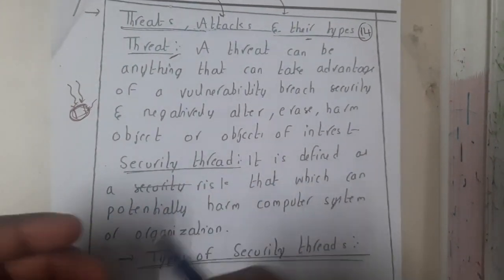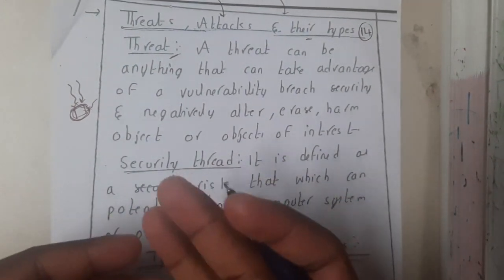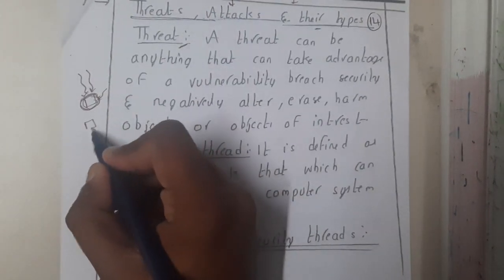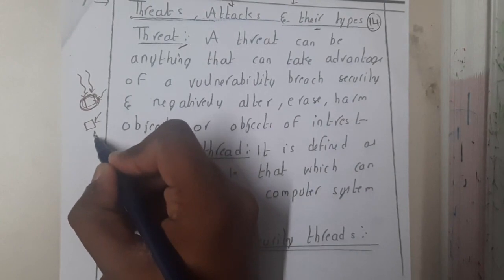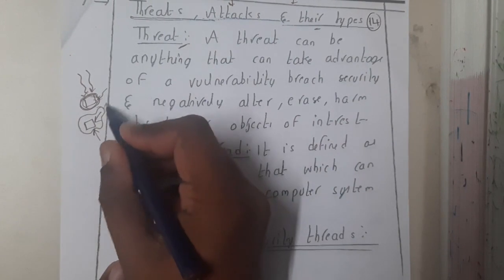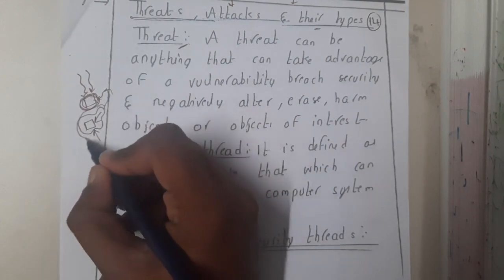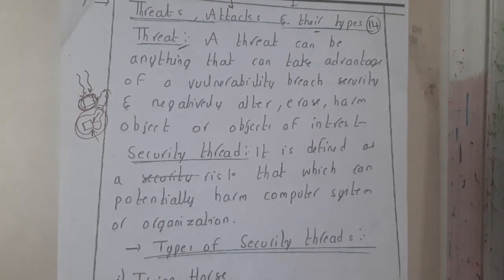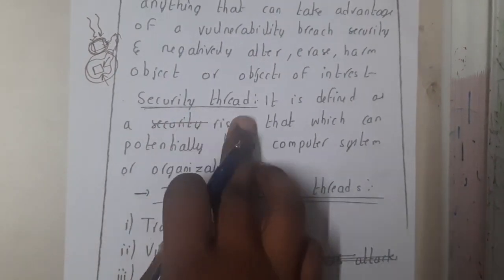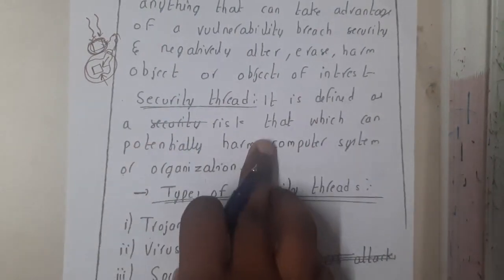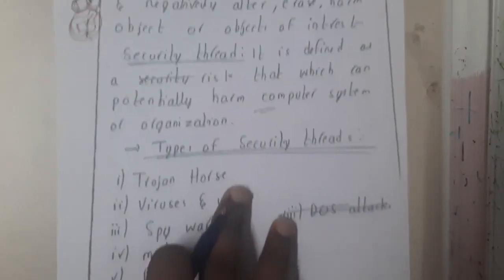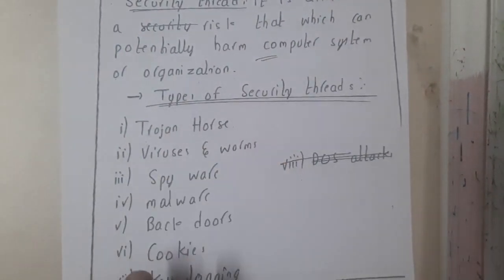Vulnerable devices are those which have the potential to get damaged. For example, if your system does not have any antivirus, a virus can come in and corrupt the data. Hence your system is vulnerable to that virus. A security threat is defined as a risk that can potentially harm your computer or your complete organization.